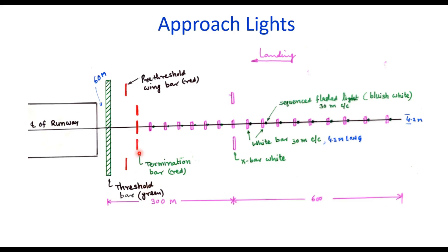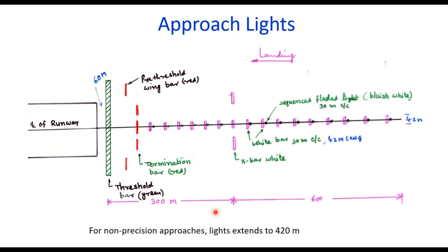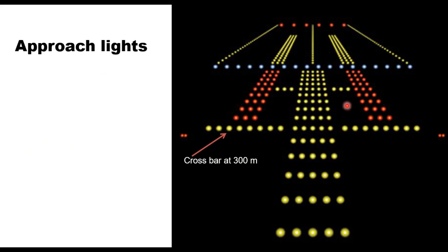Here is the termination bar, which indicates the end of the approach light. After that, there is a pre-threshold wing bar, which is red in color. Just before the runway threshold, there is a runway threshold bar, which is green in color, leaving a gap of 60 meters from the runway edge. These approach lights are provided for 900 meters from the runway threshold, but for non-precision approaches, the light extends to 420 meters only. The runway threshold is lighted in green.